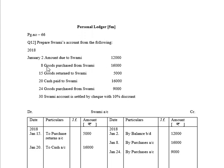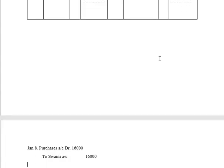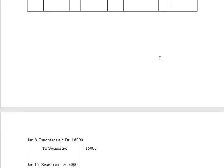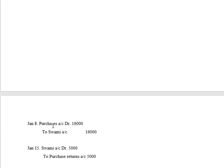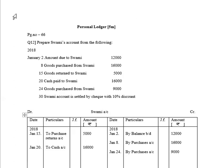The next transaction: January 15th, goods returned to Swami, 5,000 rupees. We had purchased goods from Swami on January 8th; now on the 15th, some of those goods are returned. The journal entry for purchasing goods is reversed. Swami, which was on the credit side, will now be recorded on the debit side. Purchases, which was on the debit side, will now be recorded on the credit side as Purchase Returns. As we are preparing Swami Account, we write the name of Purchase Returns. Purchase Returns is on the credit side of the journal entry, so at posting it will be on the debit side: 2018 January 15th, To Purchase Returns Account, 5,000 rupees.